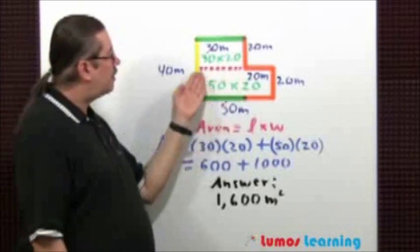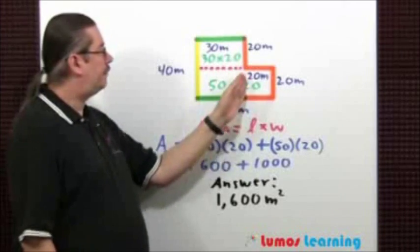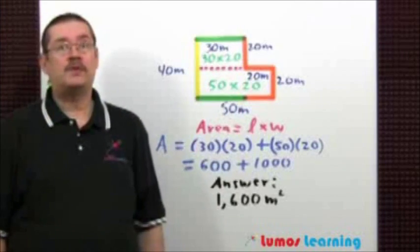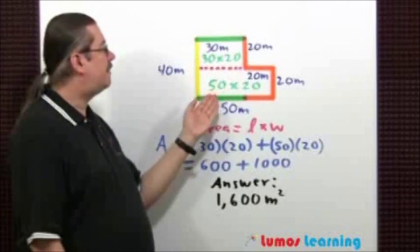For example, I place a horizontal cut right there. You could also do a vertical one. We now have two smaller rectangles of dimensions 30 by 20 and 50 by 20.